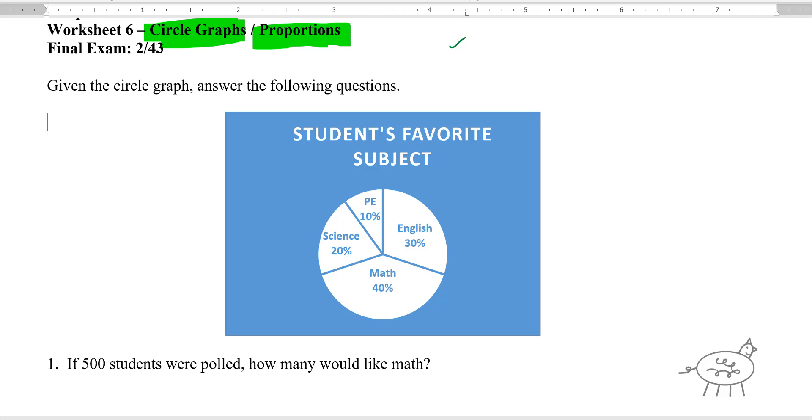The first thing you do is when you see a circle graph, you're going to see percentages on here. So like English says 30%, you've got to write this as a fraction when you're using it. Math is 40%, so 40 over 100. Science is 20 over 100, and PE is 10 over 100. You have to know that. That's super important.